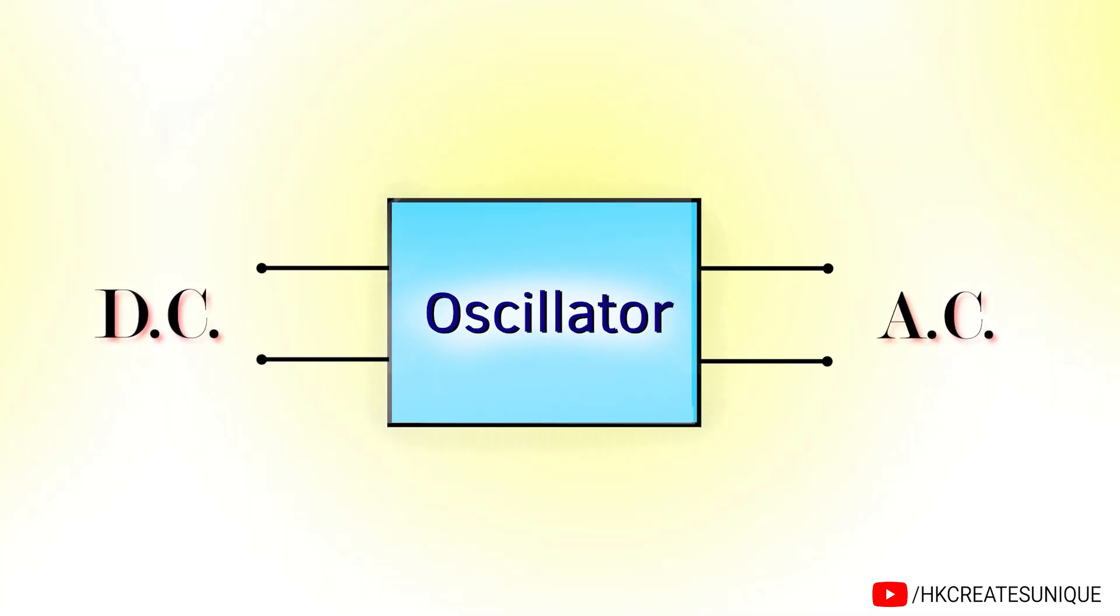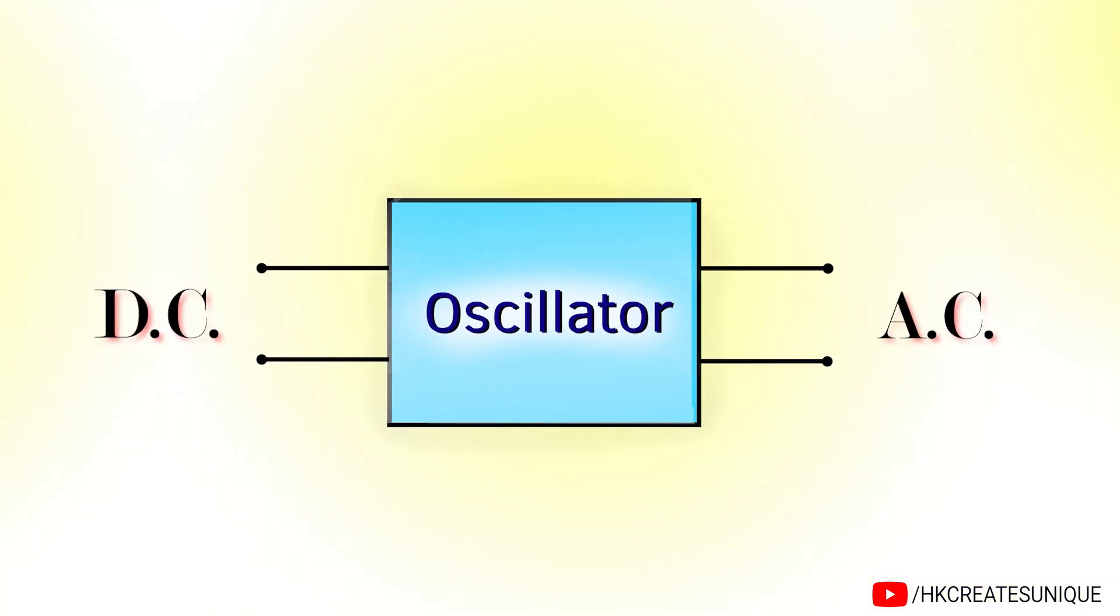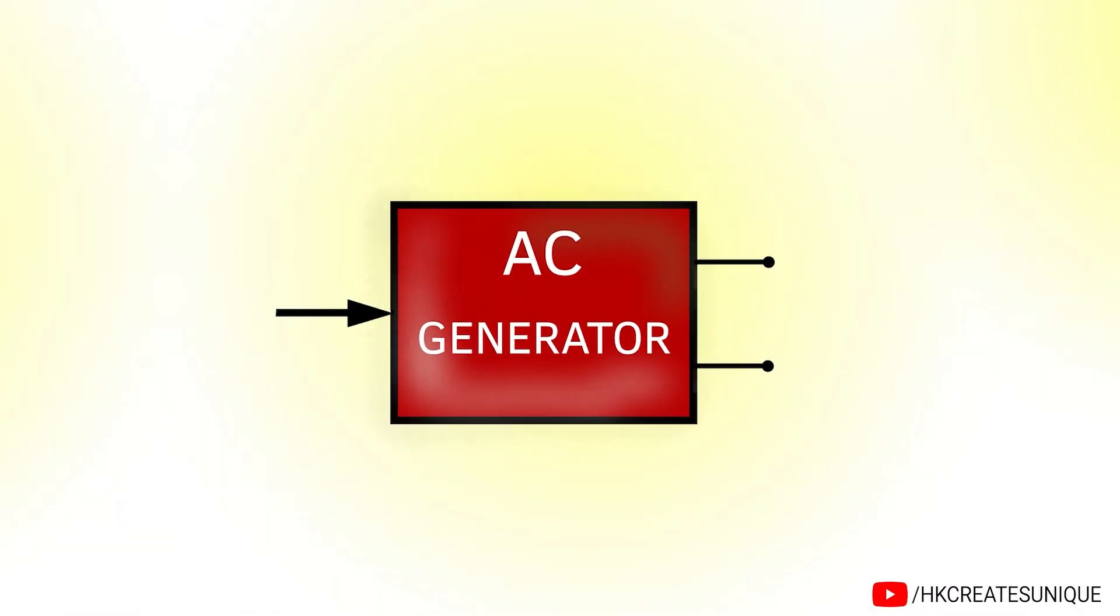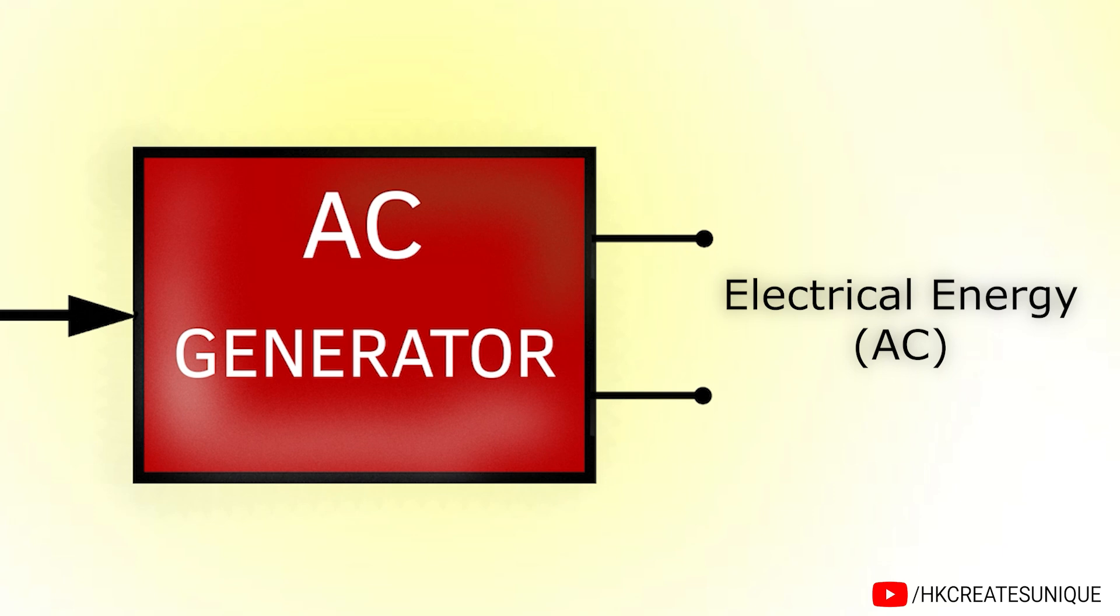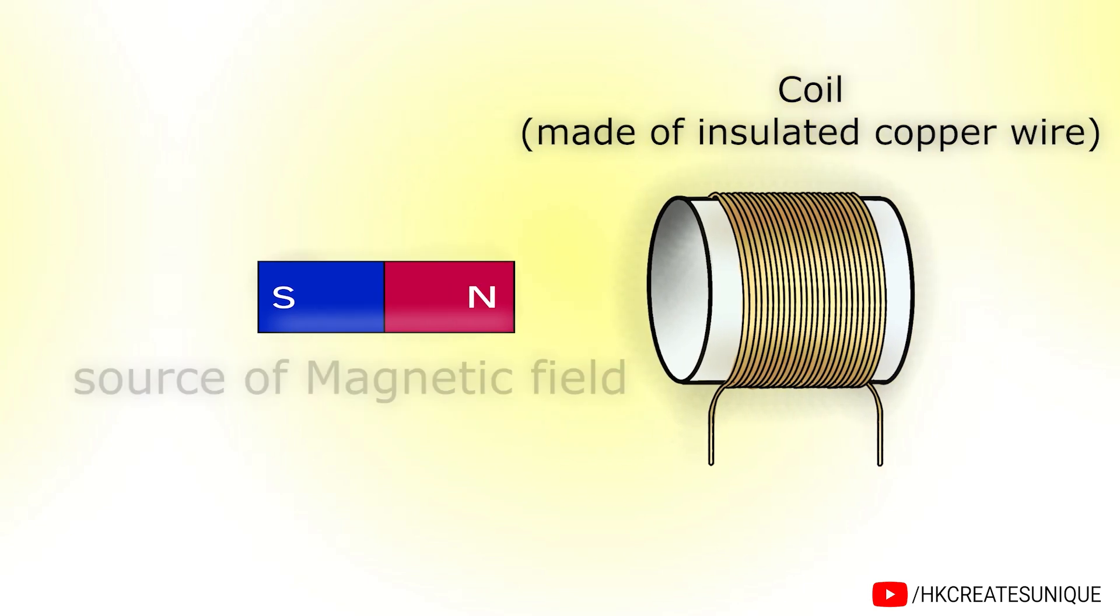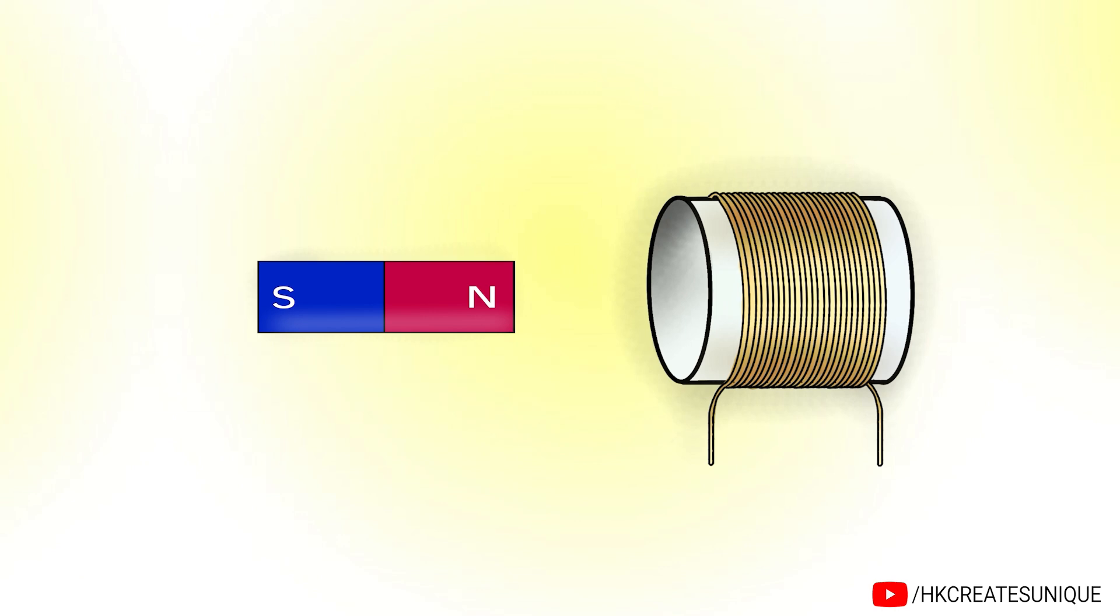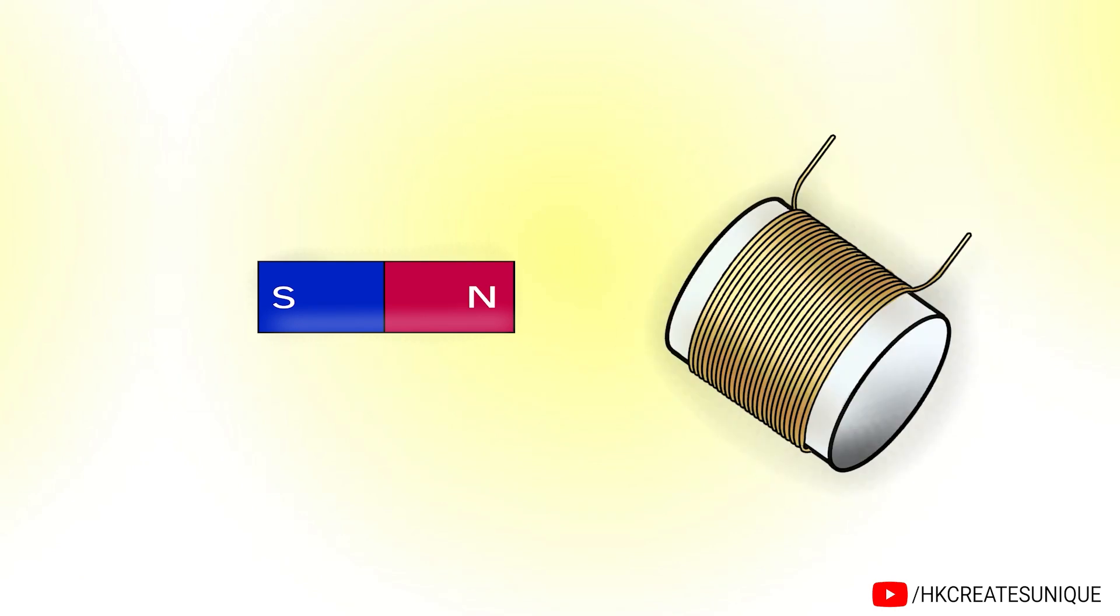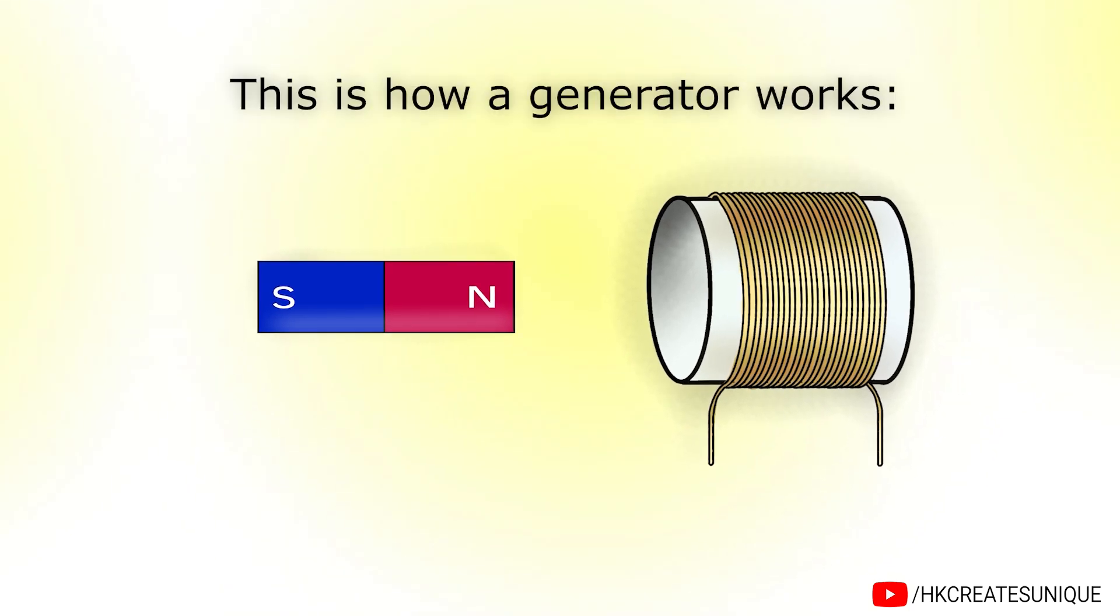Oscillators are usually used in high frequency applications such as radios. But for applications where huge amount of power is required, AC generators are used. It uses mechanical energy such as rotation from wind or steam flow to produce electrical energy. Inside any generator, the two basic requirements are a coil and a source of magnetic field such as a permanent magnet or electromagnet. The mechanical energy input either rotates the coil or the magnet while keeping the other stationary.